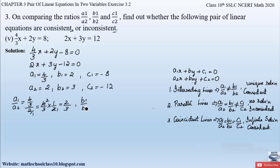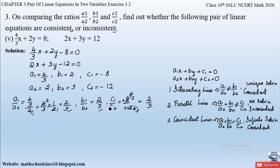Similarly, b1 by b2 is 2 divided by 3, which equals 2 by 3. And c1 by c2 is minus 8 divided by minus 12; the negatives cancel, and simplifying gives 2 by 3. So all three ratios a1/a2, b1/b2, and c1/c2 are equal to 2 by 3.